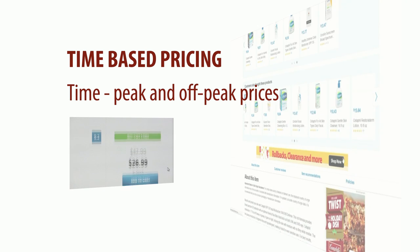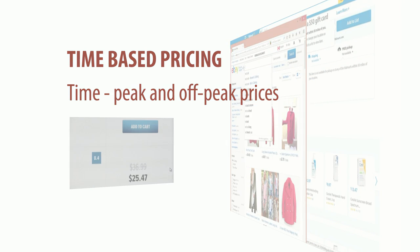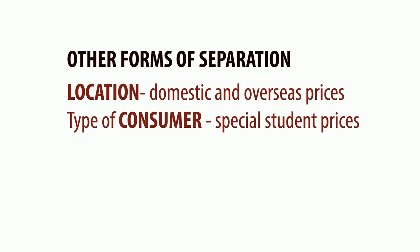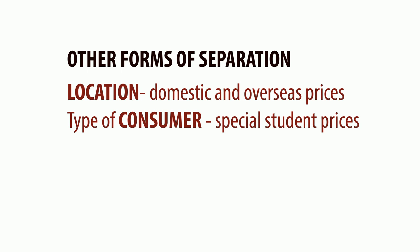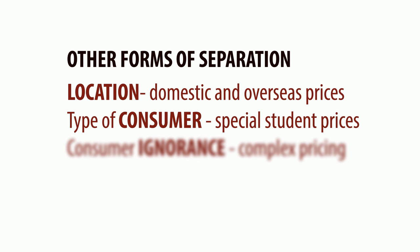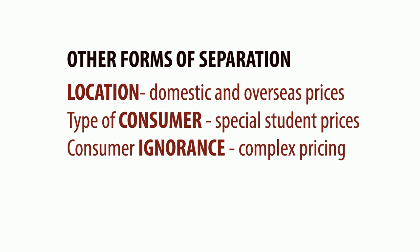Another common way to separate a market is by physical distance, such as selling an identical product in one city at a higher price than in another. Market separation can also be based simply on the type of consumer, such as students or parents, or by exploiting consumer ignorance through complex pricing structures, making it hard for consumers to compare prices and switch to cheaper options.